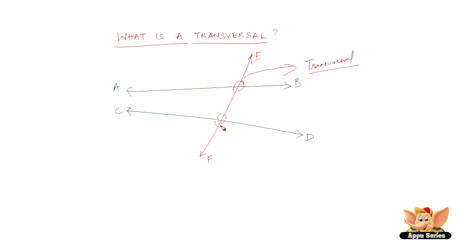Just to sum it up, transversal is nothing but a line that intersects any two given lines. The lines can be parallel, non-parallel, any two lines or a pair of lines intersected by a line is called as a transversal.